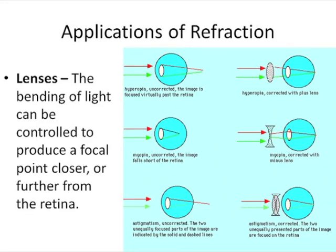In the middle, we have myopia where the focal point falls short of the retina. We would use two concave lenses to correct that. Lastly, we see that the parallel rays coming in do not converge at the same point. This is astigmatism. The two unequally focused parts of the image are indicated by the solid and dashed line. So this is a combination lens that would be used to fix it. So lenses can be used to refract light in a specified way.